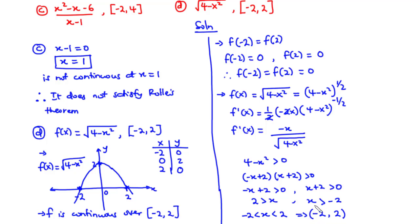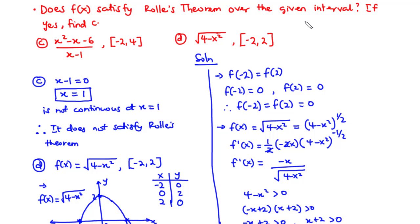Since f is differentiable over the open interval negative 2, 2, all three conditions have been satisfied: it is continuous over the closed interval, differentiable over the open interval, and f of negative 2 equals f of 2. Therefore, the function satisfies Rolle's theorem, and thus there exists at least one value C in the open interval negative 2, 2. Let's find that value C.